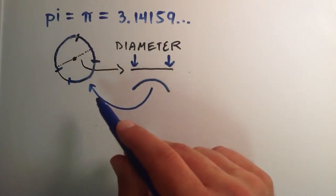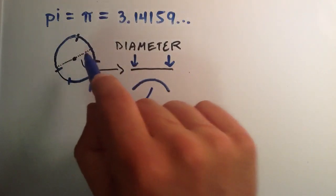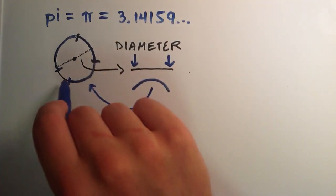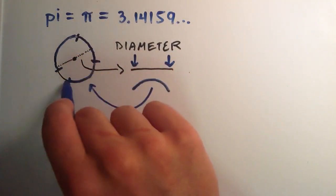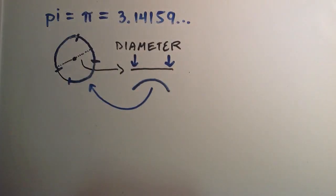Essentially, what pi is, is pi tells us the amount of times that the diameter would have to be just kind of wrapped around the outside or the circumference of the circle to cover the circumference of the circle exactly one time.